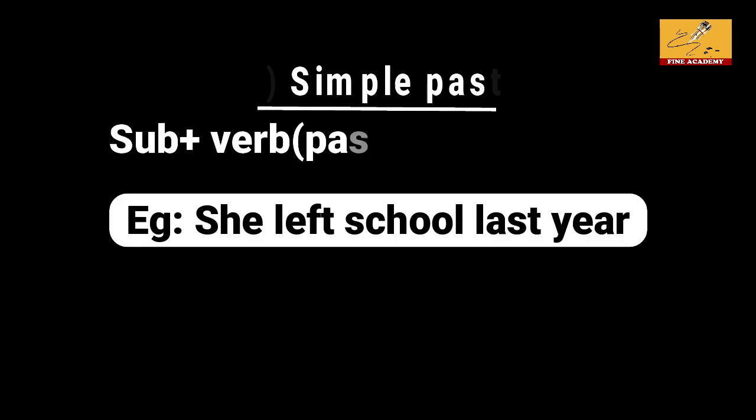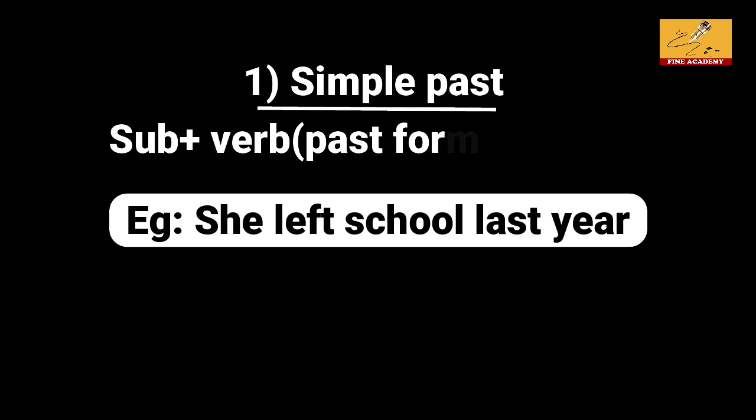For example: 'She left school last year.' Here, 'left' is the past form of the verb. So simple past structure is: subject plus past form of verb plus object.